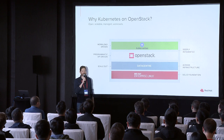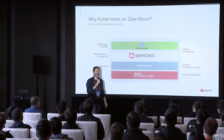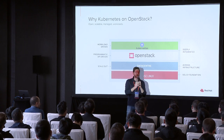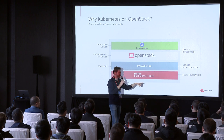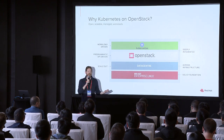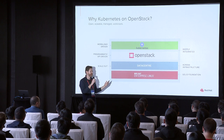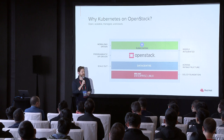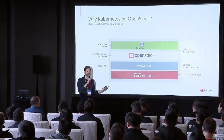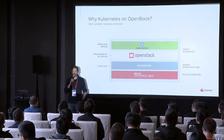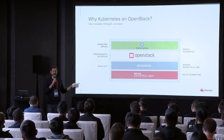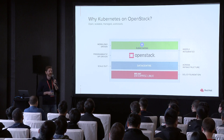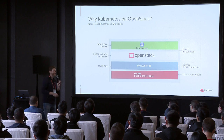My name is Ramon Acedo Rodriguez, and I'm a product manager working for Red Hat. That's why you're going to see the Red Hat logo all over here. Among other things, I'm the product manager responsible for OpenShift and OpenStack, and also for bare metal provisioning with Kubernetes and the project Ironic. We're going to talk about Ironic here. I work for the Ironic team as the product manager.